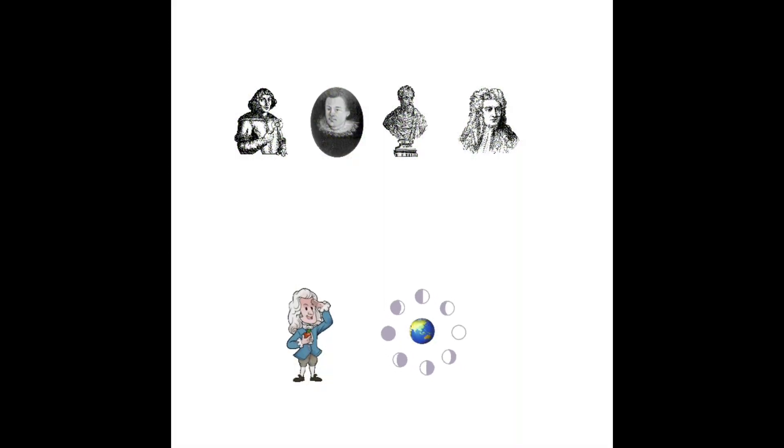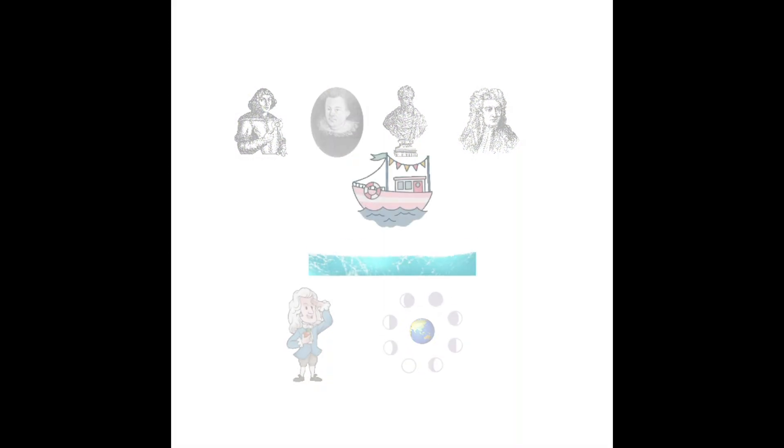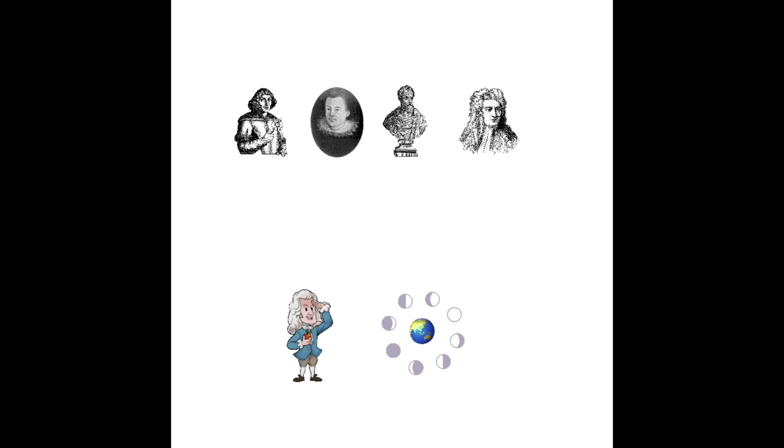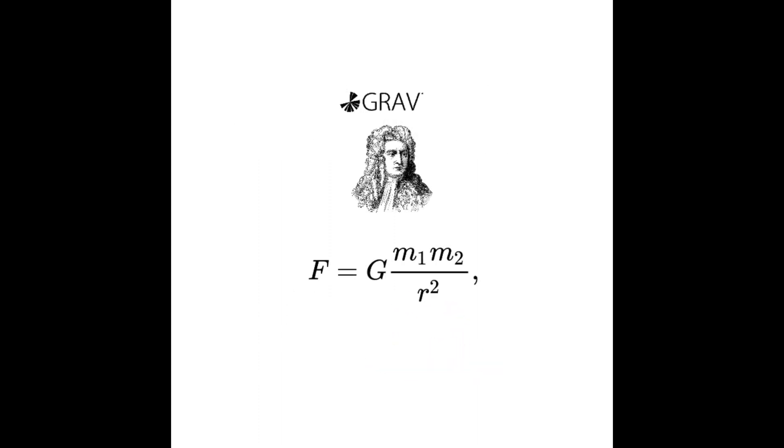Newton will create a model that can explain several phenomenons all at once. The falling of an apple. The tides in the oceans. The rotation of the Moon around the Earth. The orbiting of the Earth around the Sun. All explained by one single theory. One single formula.